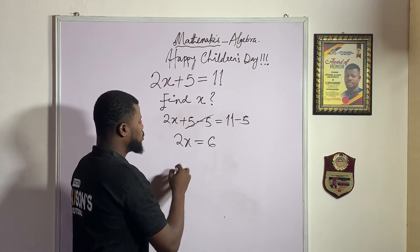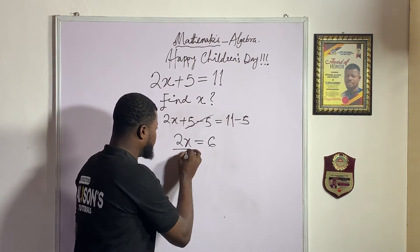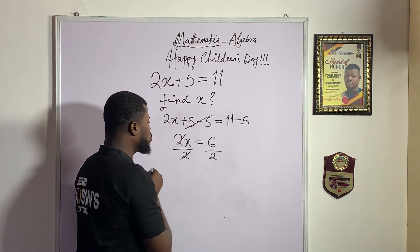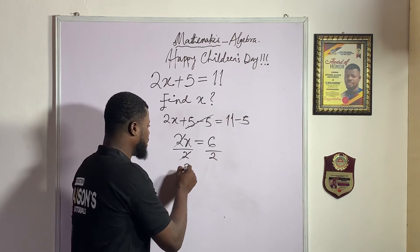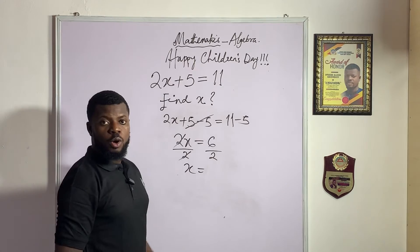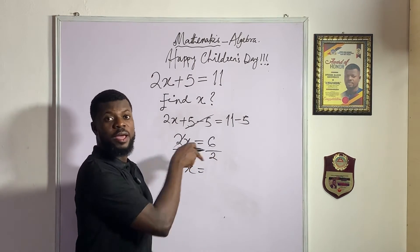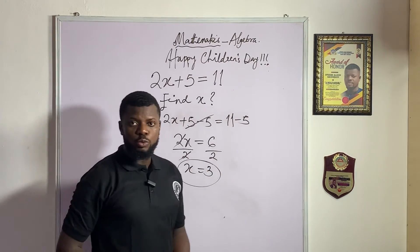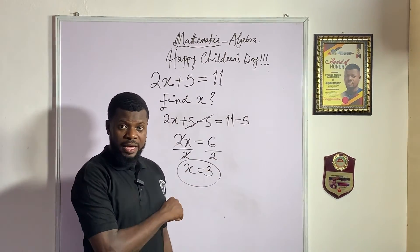The next step is to divide both sides by 2. The 2 will cancel out, leaving x alone on the left side. If you divide 6 by 2 — or count how many 2s are in 6 — the answer is 3. So x = 3, and that is the solution to this problem.